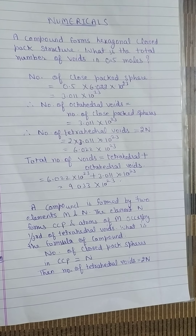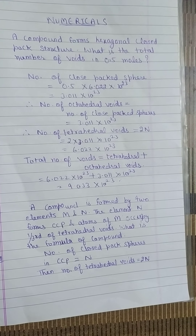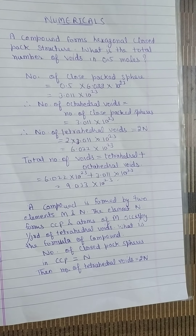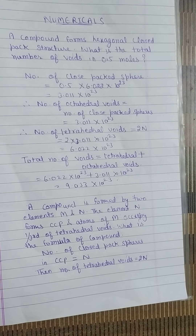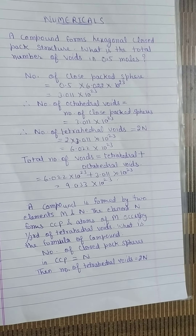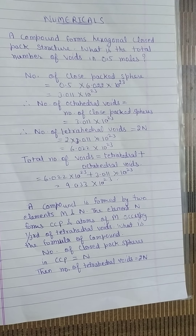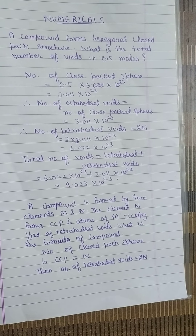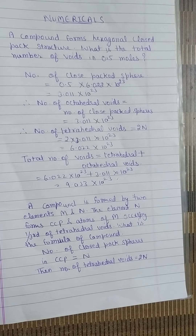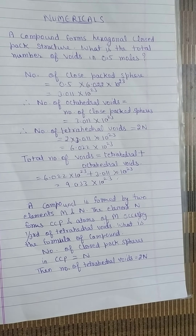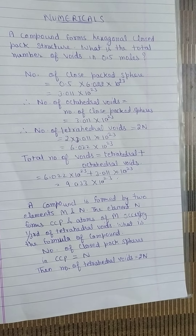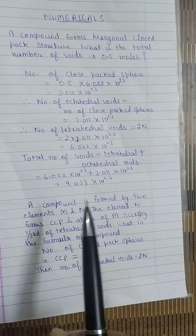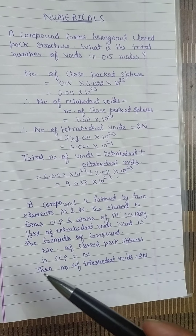Good morning 12th standard. Today we will do the practice of numericals based on tetrahedral and octahedral voids. I have already discussed the formula: the number of octahedral voids equals n, whereas the number of tetrahedral voids equals 2n — double of n. Now we come to the practice questions and will see how to solve such numericals.